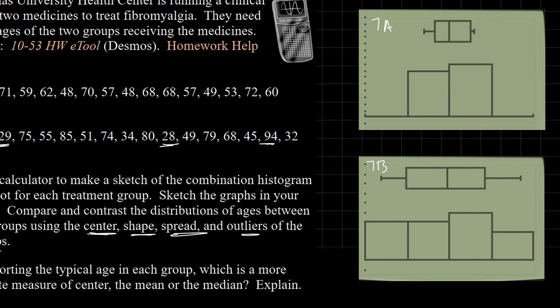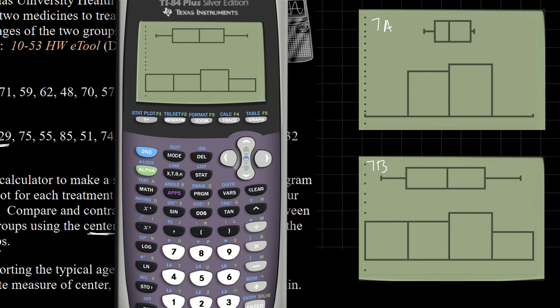The center - I think we do have potential outliers with the 94 and the 28, so I probably would consider using the median as my typical value. If I wanted to look at that for this second group, if you hit trace, I'm tracing plot number one which is currently reading data from list two, which is group 7B. If I go over, there's my median, it's at 59.5.